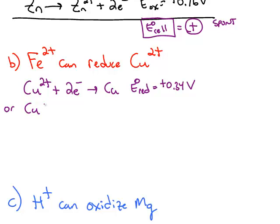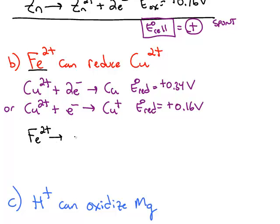And there is another value in the table. Copper 2+ can be reduced by gaining just one electron and forming copper 1+. The standard reduction potential for this half reaction is positive 0.16 volts. So we have two possible reductions. When you look at iron 2+, iron 2+ in this example can't be reduced because then we would have all reductions. So we have to find iron 2+ being oxidized and we can find it turning into iron 3+. And the standard oxidation potential is negative 0.77 volts.